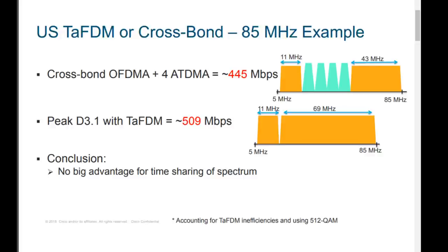85 MHz plants in the US exist but aren't the majority. Europe and other regions have a lot of 65 or 85 MHz return plants and many more options. With 65 or 85 MHz returns, you can keep four SCQAM channels for legacy modems and add a wide OFDMA space for 3.1 modems, achieving peak speeds up to half a gigabit in the return. We'll also talk about FDX versus the 204 MHz split — and whether to skip to full duplex DOCSIS.